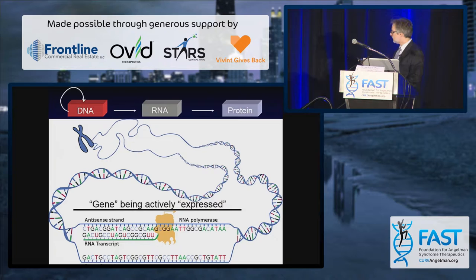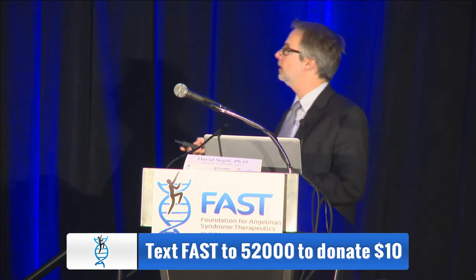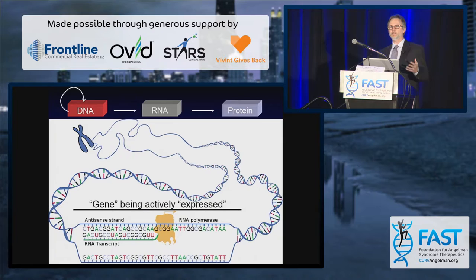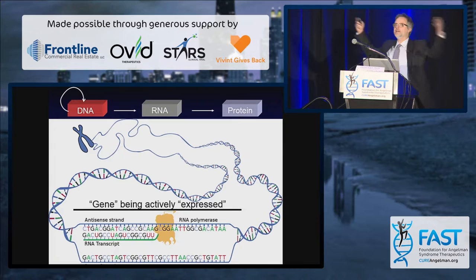Understanding how all of these things happen — the enzymes involved and the regulation of all of that — we start to understand how we might be able to control which genes are turned on and turned off, and how we can use that for the treatment of disease. For example, with all that DNA in our cells and over 23,000 genes, how does the cell decide which genes are going to be turned on and which are going to be turned off?